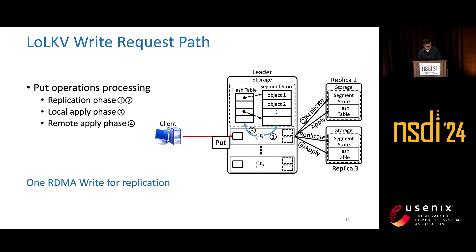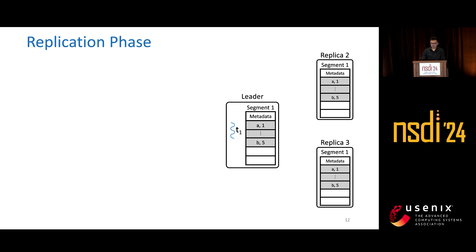We only have one RDMA write for replication, which is on the critical path. And we have another async RDMA write for application, but this is off the critical path.